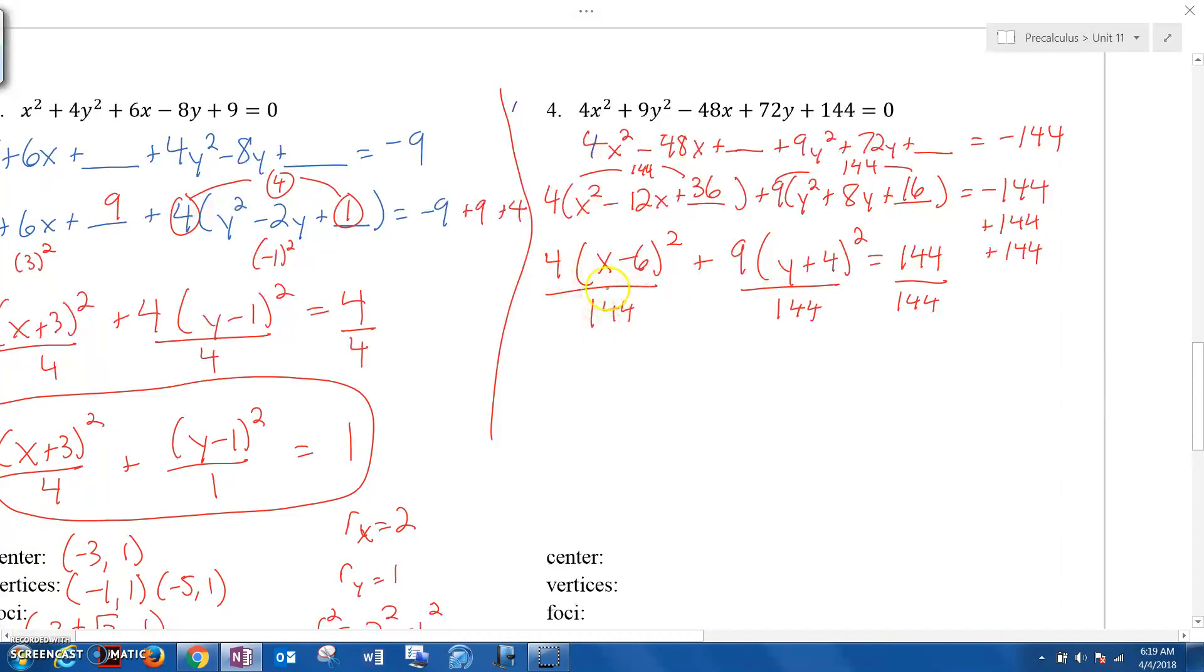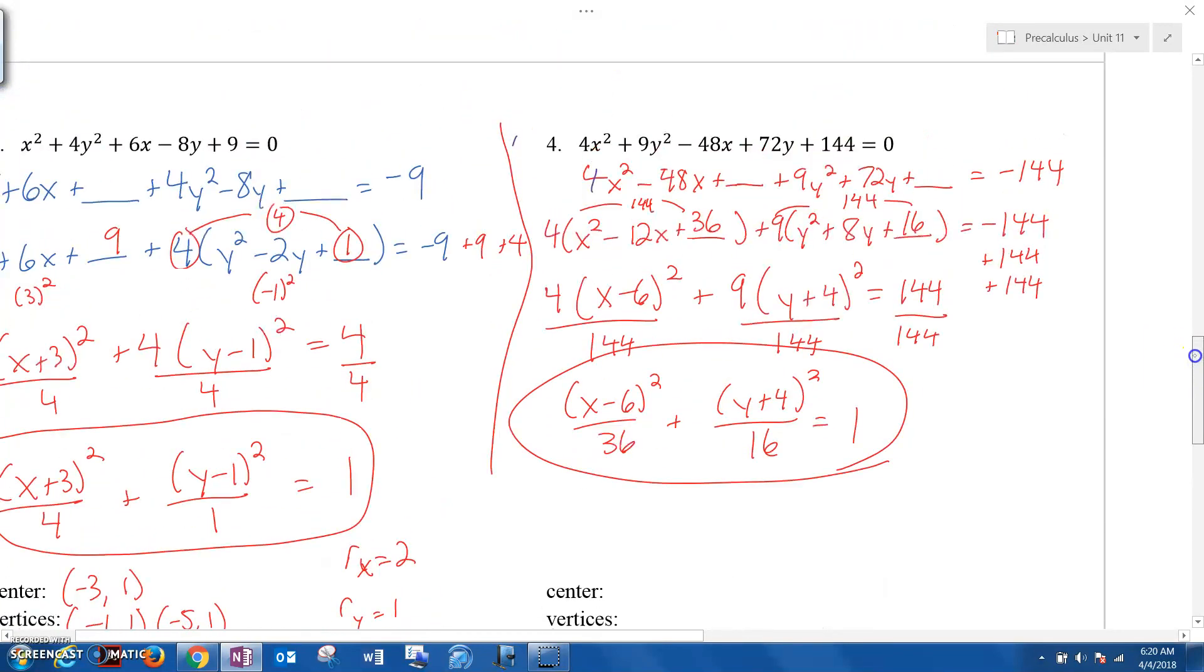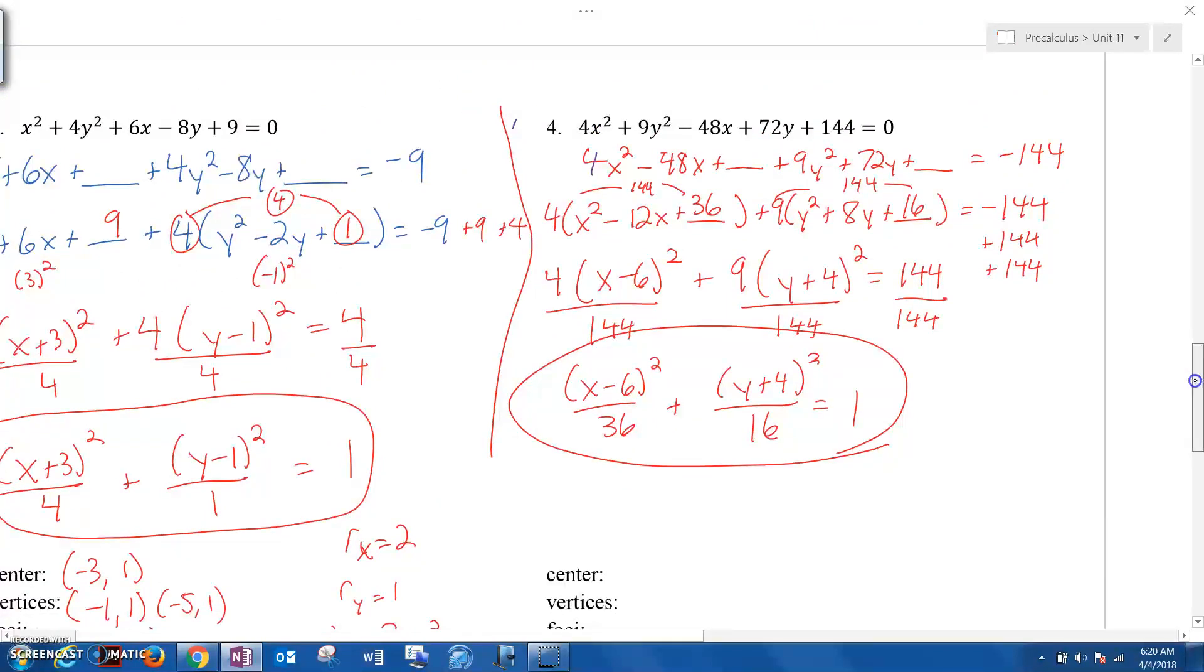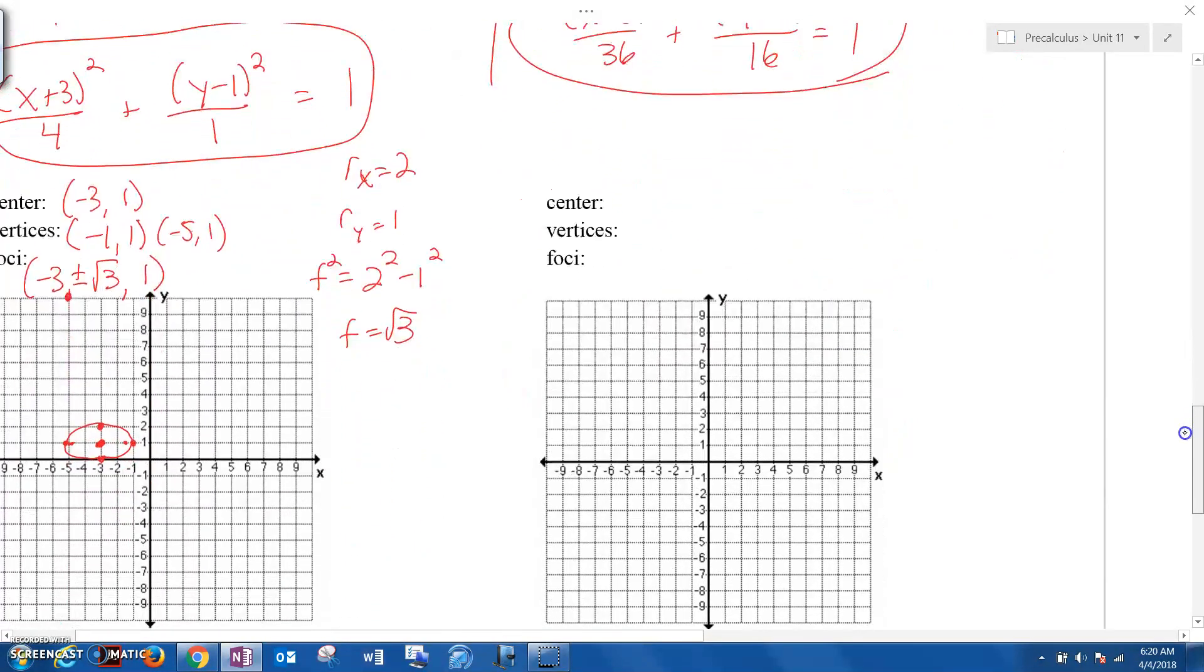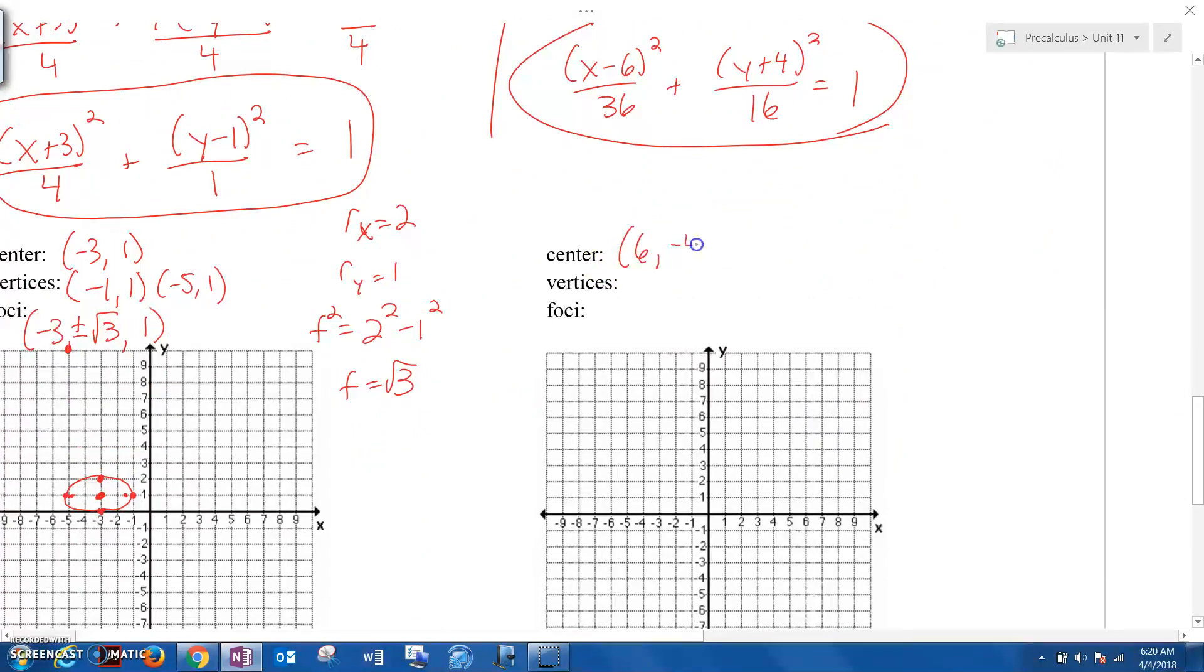We're almost there. The last step, again, for an ellipse, is you need to divide by the number to get it to a 1. And then in your calculator you can just math. We're not going to be using our calculators though. But if you noticed, 144, 4 times blank is 144. It's up here in our completing the square, it's 36. So this is going to be (x-6)² over 36 plus (y+4)² over, well, 9 times 16 is 144 equals 1. And there we go. I know this video is getting long.